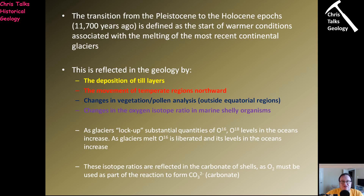In terms of the transition from the Pleistocene to the Holocene Epoch, so 11,700 years ago, it's defined by the start of warmer conditions associated with the melting of the most recent continental glaciers. Around 12,000 years ago, we begin to see a bit of an increase in global temperatures. This is reflected in the sudden increase in the amount of deposition of glacial till — glacial till is the sediment deposited at the front of a glacier, so it's a glacial sediment. Obviously, when glaciers start retreating, we see more glacial till forming.